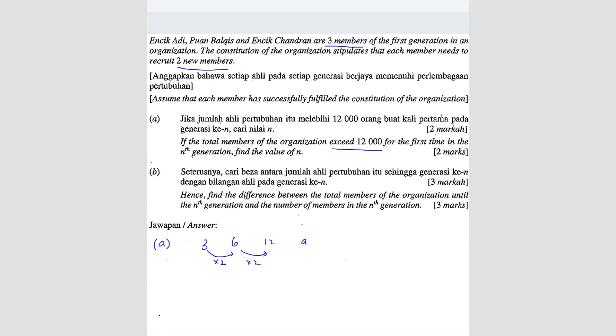From here, we know A is equals to three and the common ratio R is equals to two. So what the question is asking, they ask you to find the value of n when the total number of total members exceed 12,000. So total members means SN.